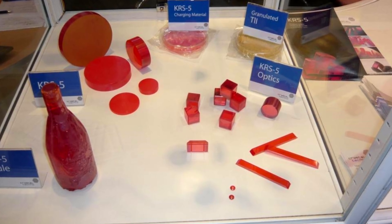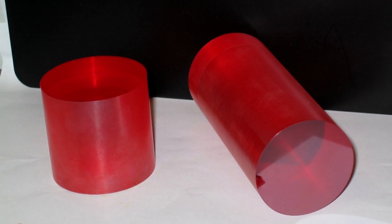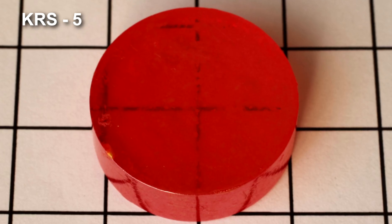The second application is mixing thallium iodide with thallium bromide to make optical crystals that infrared light can perfectly pass or be refracted through.